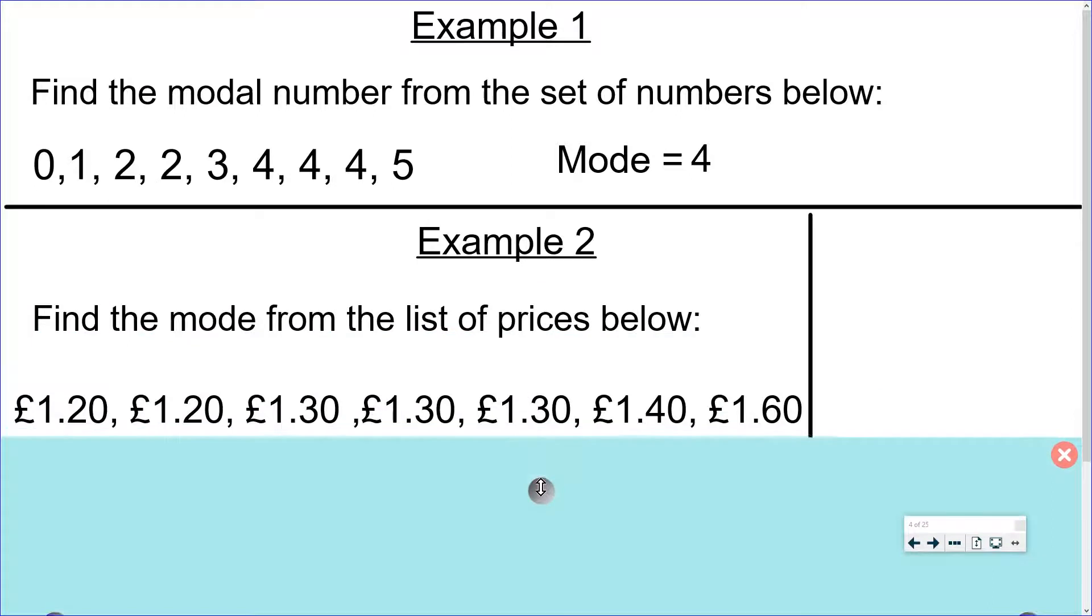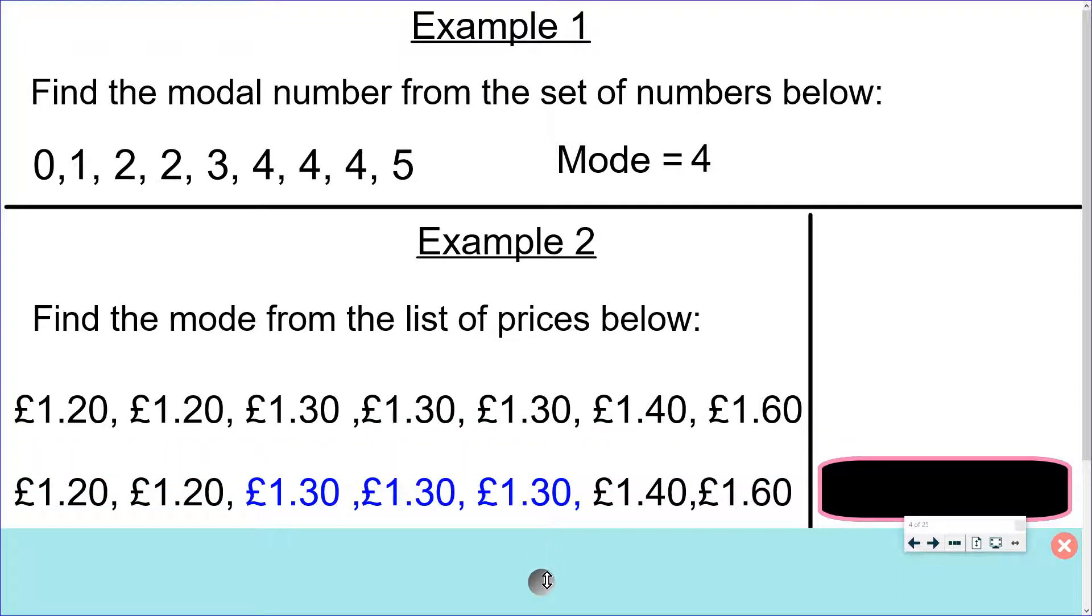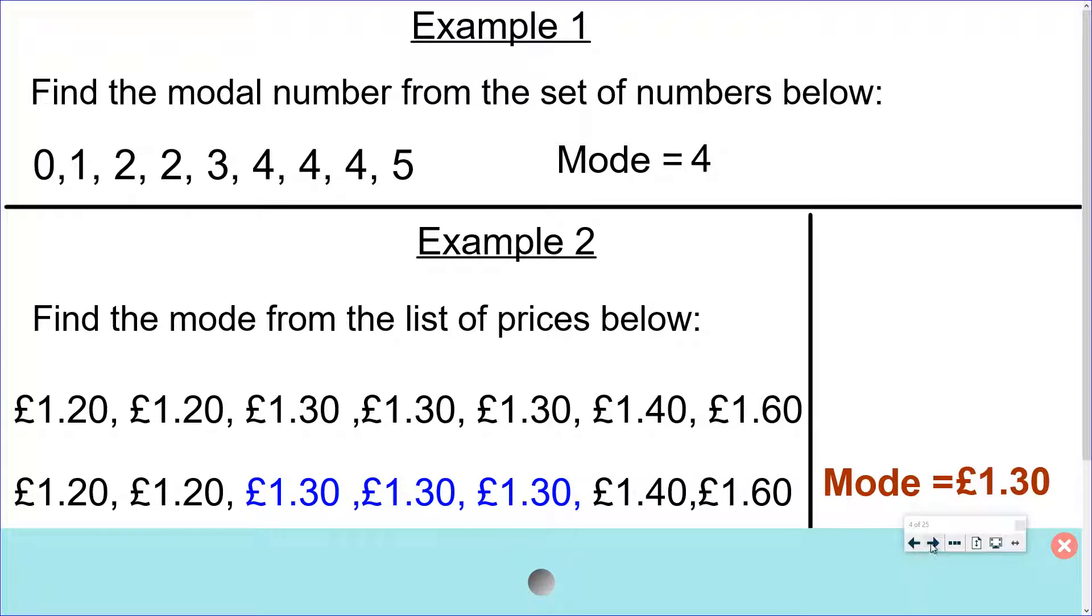Example 2. Find the mode from the list of prices below. So we just have to work out which price occurs the most often. So after a little look we can see that £1.30 occurs the most which is three times. So we could say the mode is £1.30.